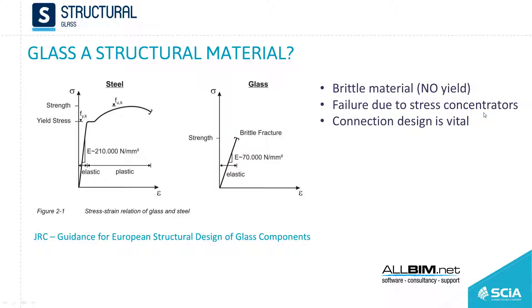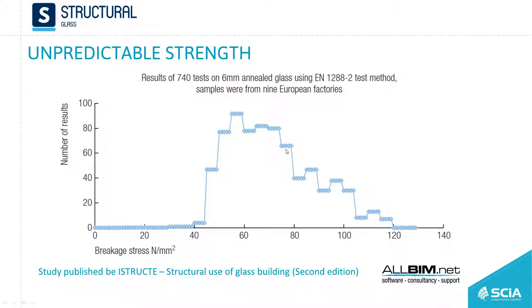Glass usually breaks along the connections. Especially if we have point connections like spiders, that is the area that needs to be studied, because that is usually where the cracks appear or the failure comes from. Connection design is vital in glass. Also, glass is a bit unpredictable, and we will get to the chemical composition of it to understand why it behaves this way.